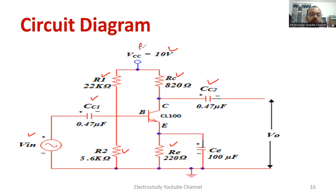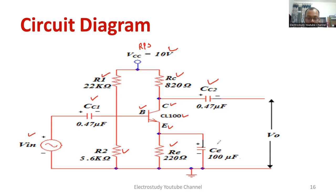The VCC of 10 volts is set using the regulated DC power supply. We can also see the BJT — it has the base terminal, collector terminal, and emitter terminal. The arrow indicates it is an NPN transistor; we have chosen CL100. The output is taken from the collector side. CE is a bypassing capacitor connected in parallel with the emitter resistor. Make sure you correctly identify which is VCC and which is ground, and do the connections properly.